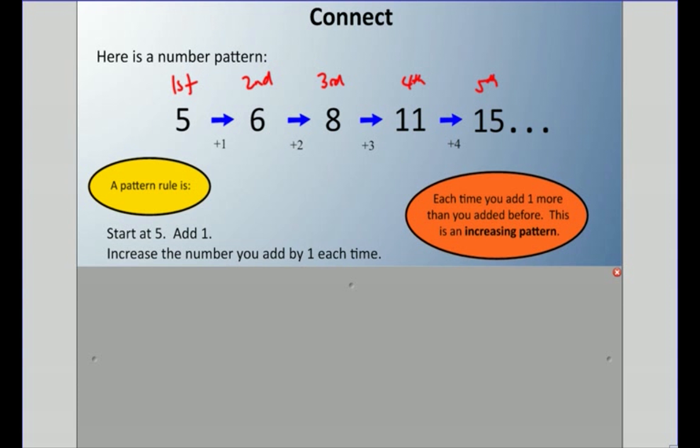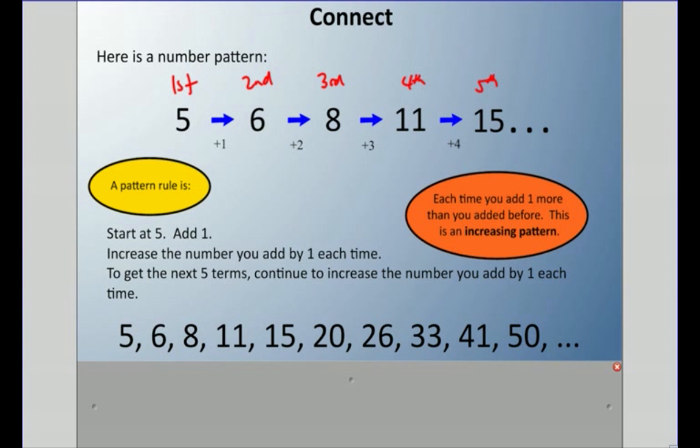You can imagine if it's going down each time, it's probably called a decreasing pattern. Well, to get the next five terms, continue to increase the pattern you add by each one each time. So if we were to continue this, it was at 15 we left off. We have to add five, which gets us to 20. Add six, which gets us to 26. Add seven, which gets us to 33. Add eight, which gets us to 41. Add nine, which gets us to 50. And so on.